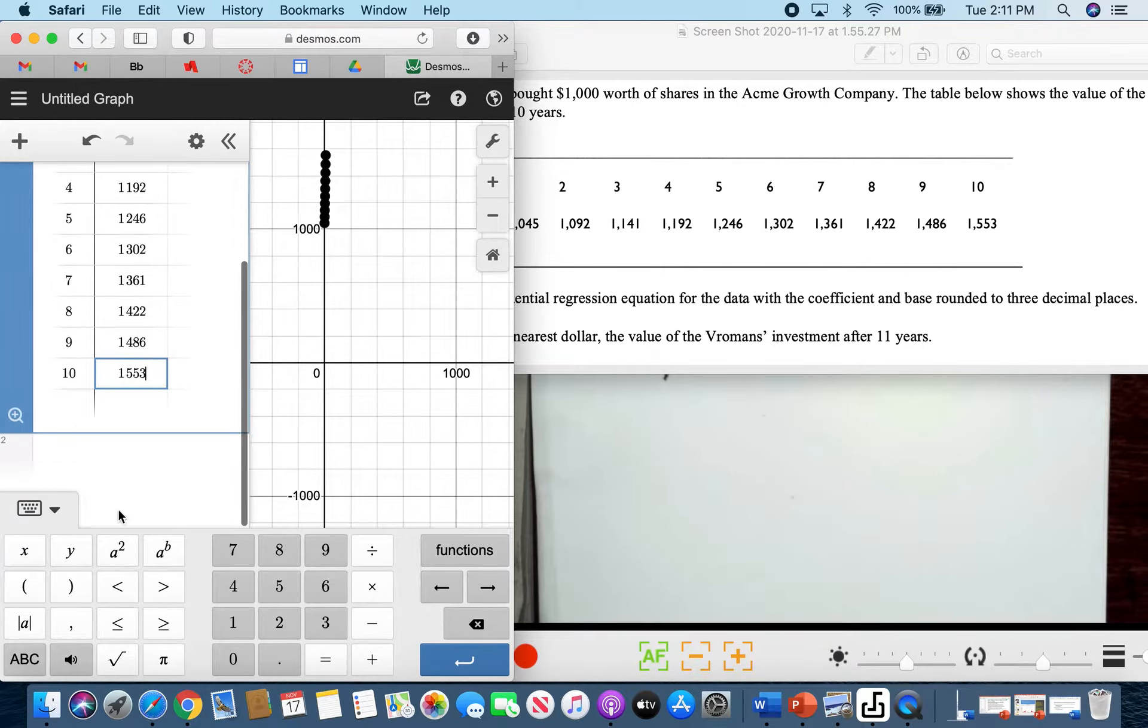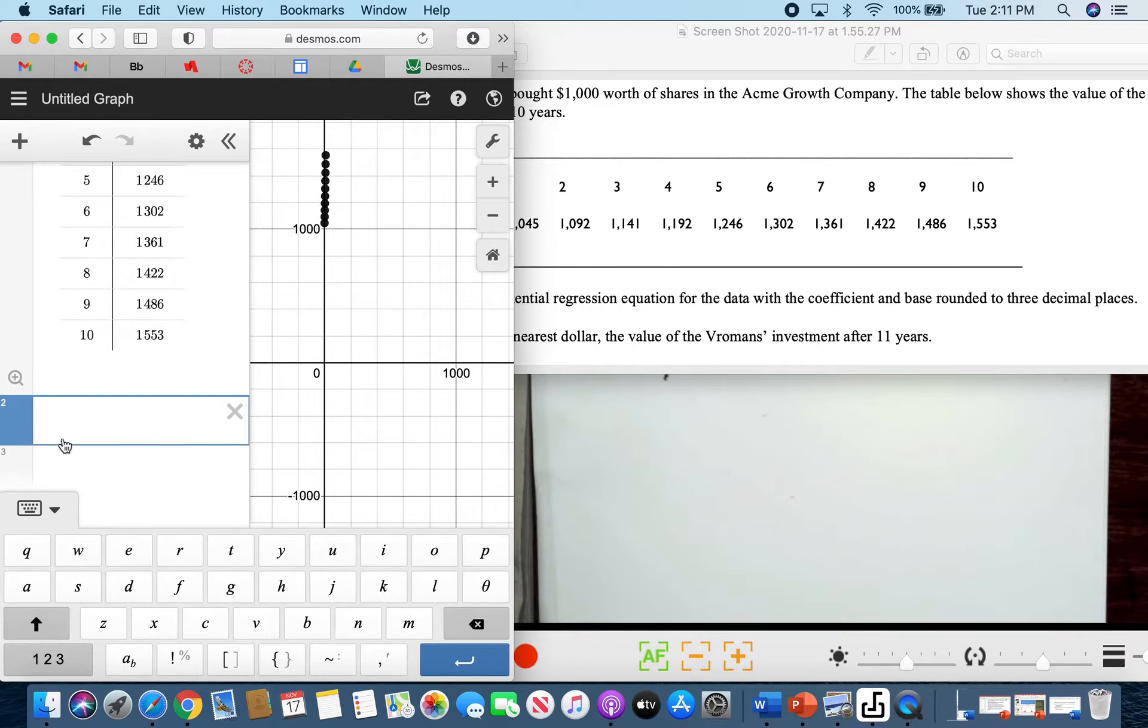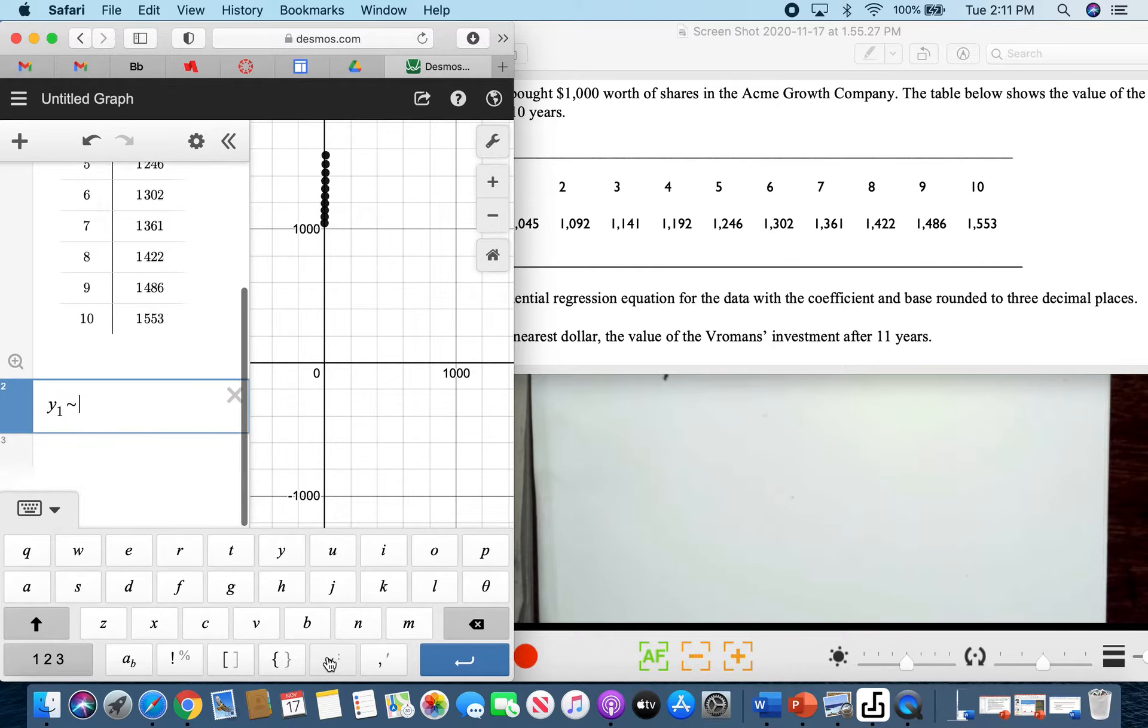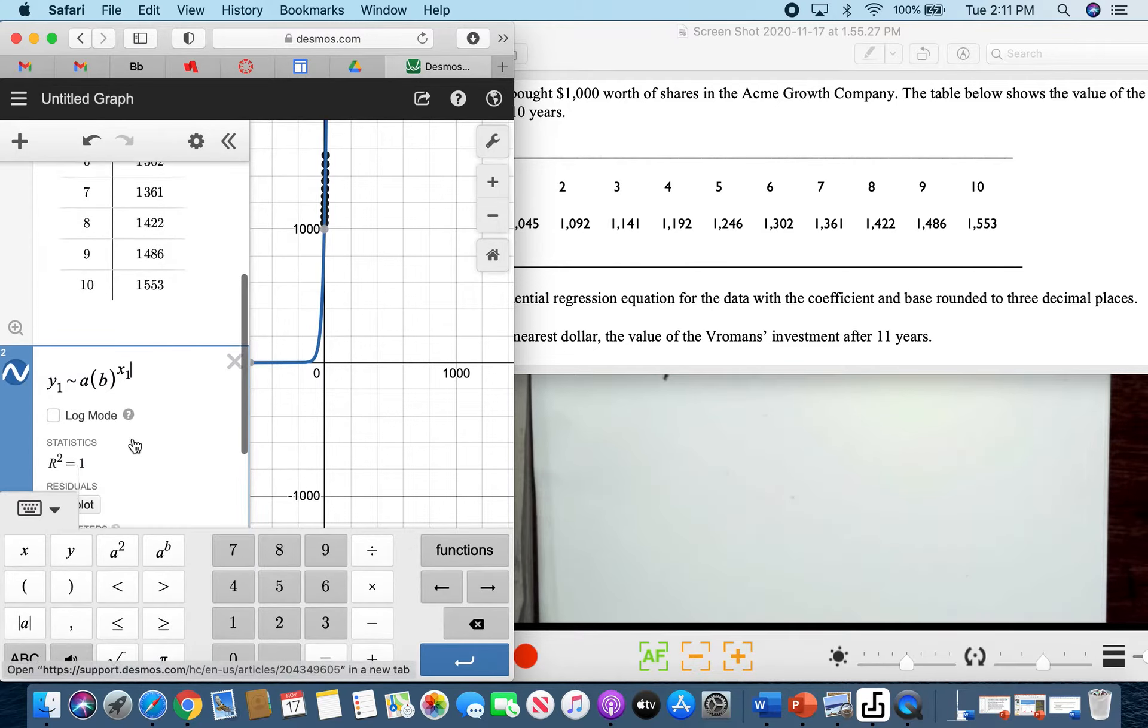So to find the equation, we just need to input our exponential regression. You have Y₁ similar to A, which is our initial value when X is 0, times B raised to X subscript 1. As you can see,